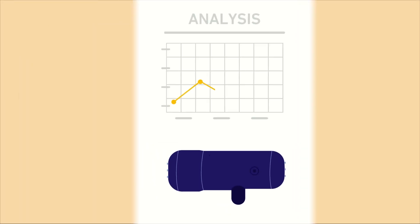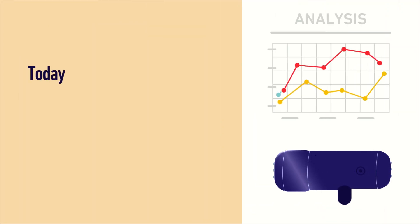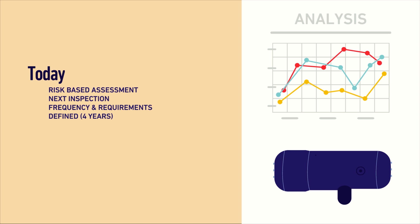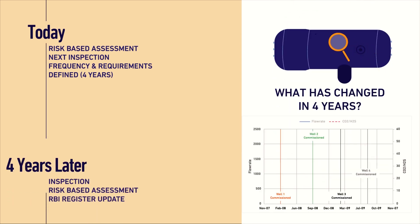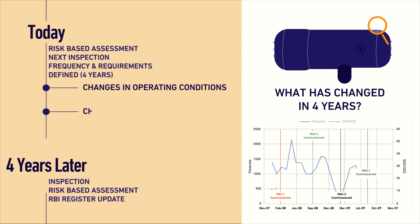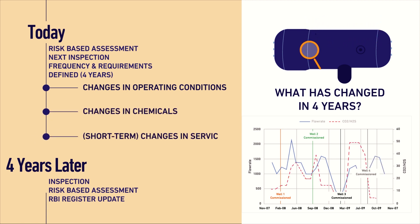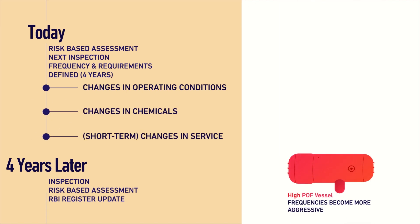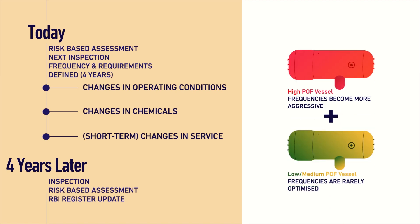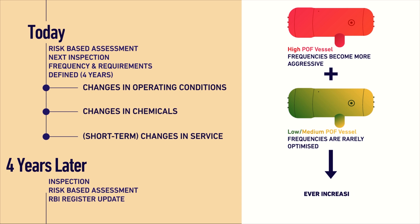For example, an RBI performed for a pressure vessel today generates a four-year inspection interval. Over the next four years, there could be several variables that may invalidate the original RBI decision made. While RBI is typically successful in identifying high-risk equipment and driving risk reduction, our analysis shows that for low- and medium-risk equipment, inspection intervals are rarely optimized.